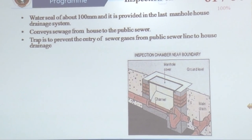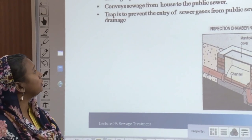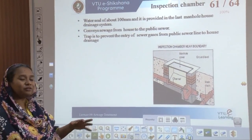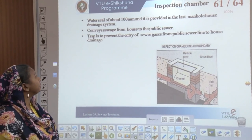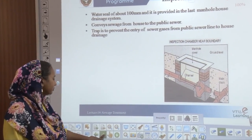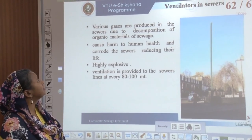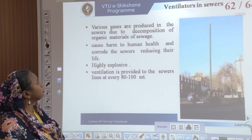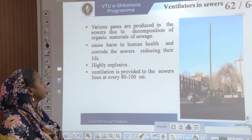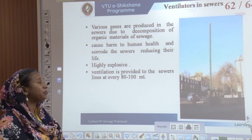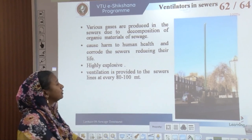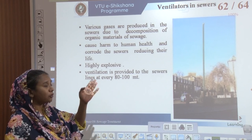The inspection chamber has a water seal of about 100 mm provided in the last manhole of the house. It conveys sewage from house to the public system, where the public and private systems are separated. This trap prevents the entry of sewer gases from public sewer lines into house drainages. Ventilators in sewers are needed because various gases from decomposition of organic materials can harm human health and corrode sewers. Ventilation is provided at every 80 to 100 meters to a height of at least 4 to 5 floors, since these sewers can be highly explosive.